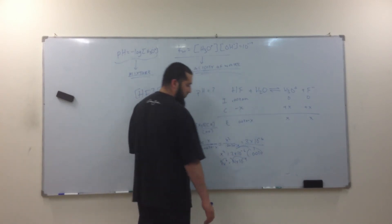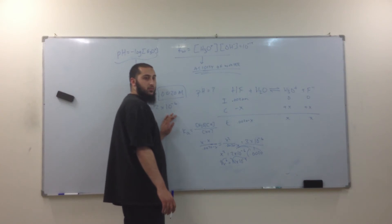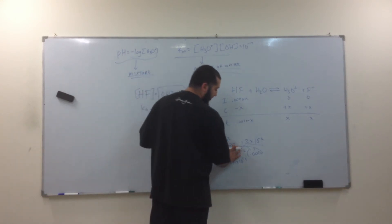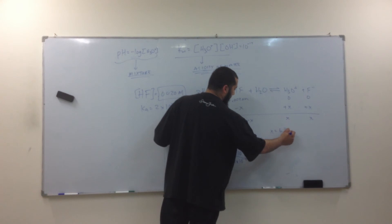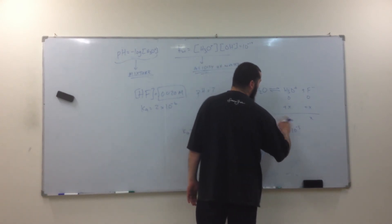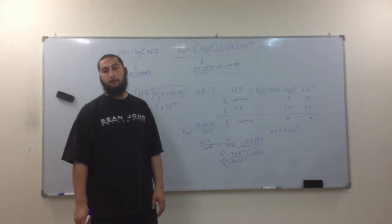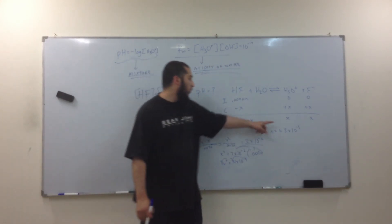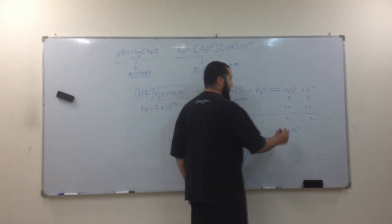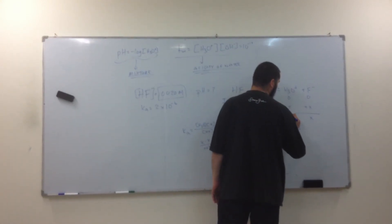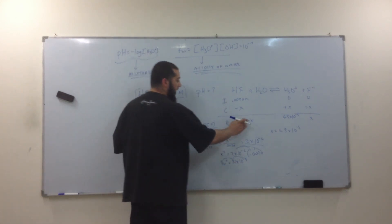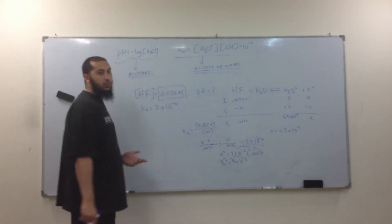And then we're going to square root both sides. What do you get? 6.3 times 10 to the power of negative 5. So what's my concentration of H3O plus? X is what? 6.3 times 10 to the negative 5. What's this right here? X. So what is my concentration? 6.3 times 10 to the negative 5. Because it's so small it's insignificant.